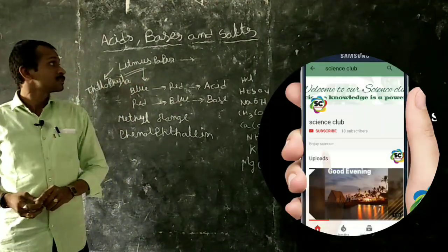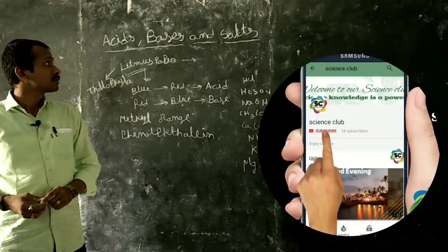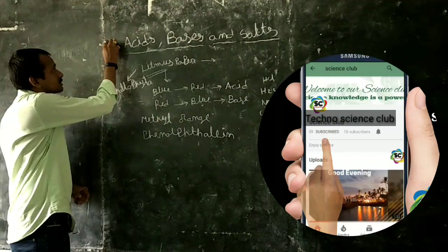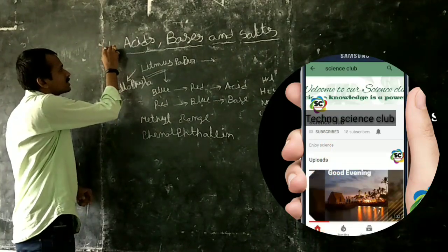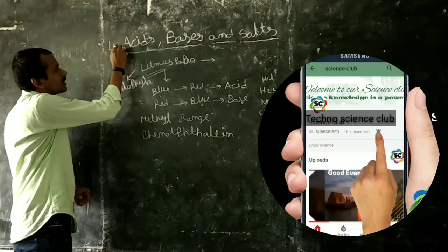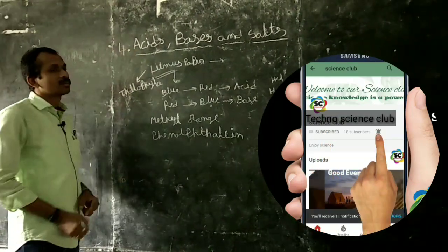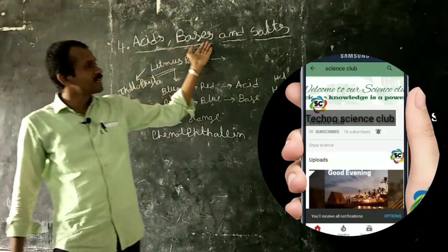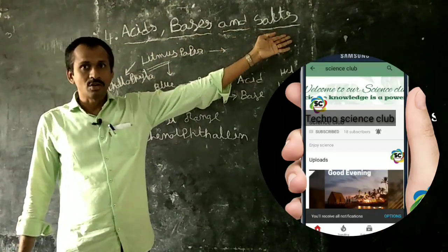Today's topic is, in 10th class chemistry part, unit number 4: acids, bases and salts.